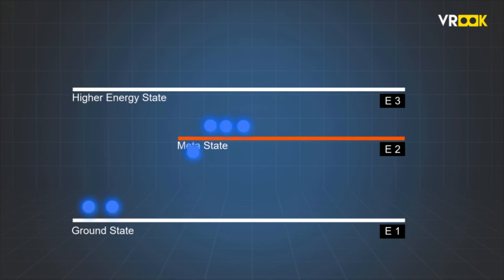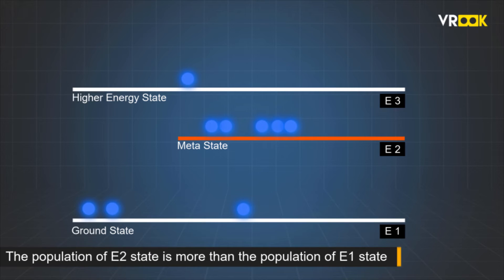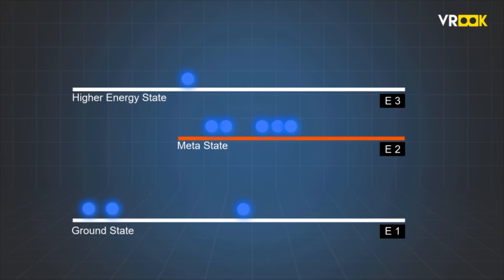So the population of the atoms in E2 state increases gradually. As the process continues, we reach a stage where the population of E2 state is more than the population of E1 state. This is known as the population inversion.